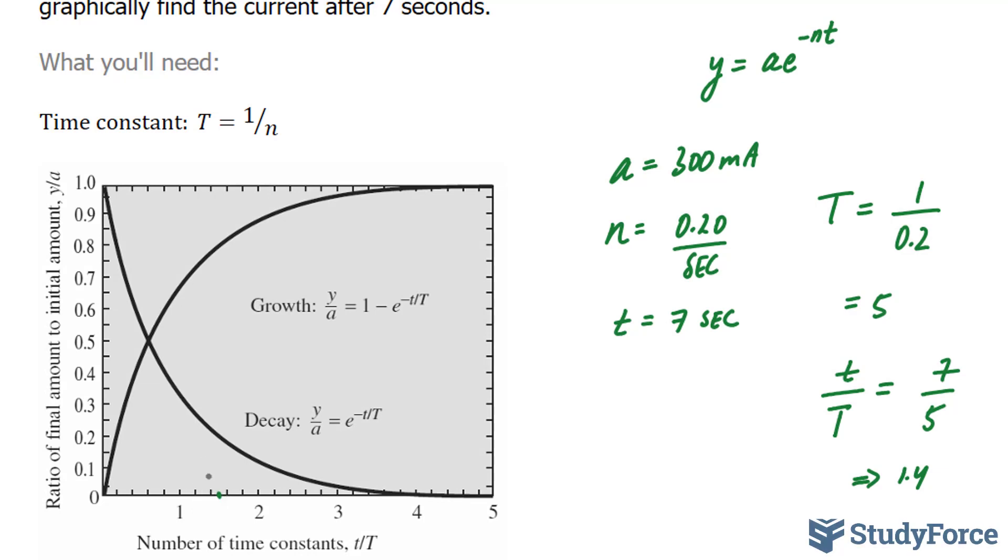So I'm going to draw a vertical line from here until I reach this curve, because that curve tells us what happens during a decay process. Now, I'm going to find out what this point right here is equal to. And we can assume that it is equal to approximately 0.21.